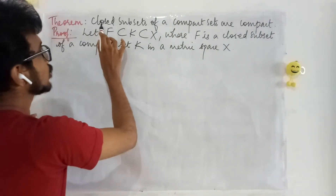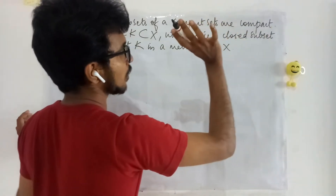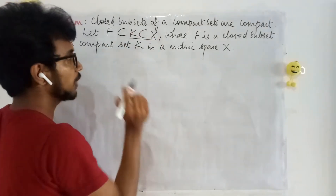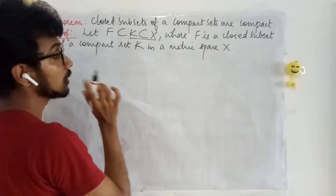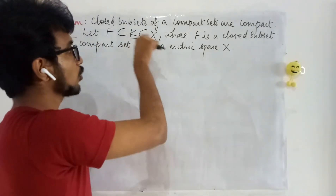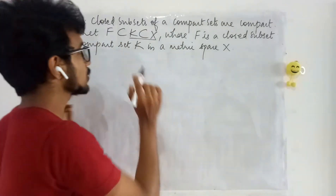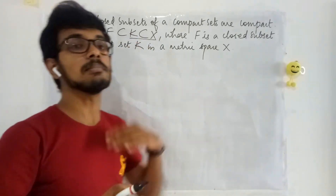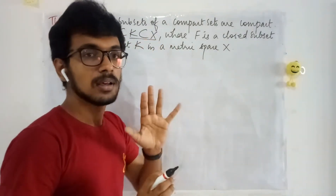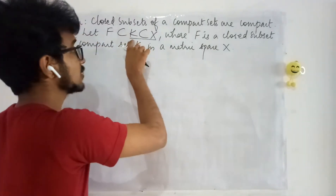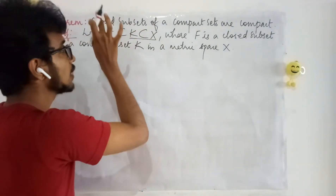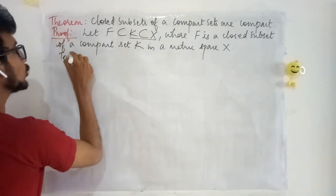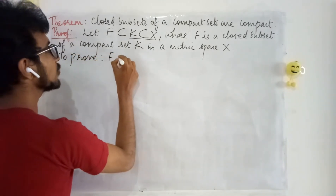Here we are asked to show that closed subsets of compact sets are compact. Which means we will have to take a compact set in any metric space and we have to take some closed subset of this compact set. Here it is just a compact set K in metric space X, and F is some closed subset of this compact set K. We need to prove F is compact.